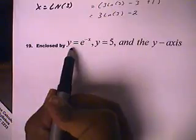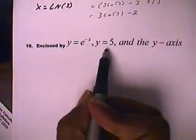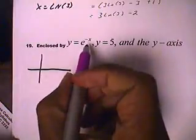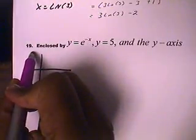All right, similar problem. This time, we want the area that is enclosed by y equals e to the negative x and y equals 5, and the y-axis. So, to take a look at what this is going to look like, let's go ahead and graph e to the negative x. This is a rapid to slow decay.